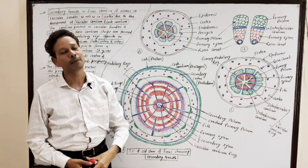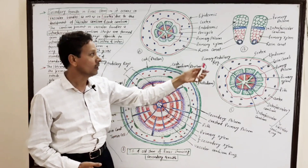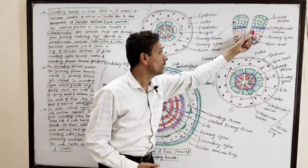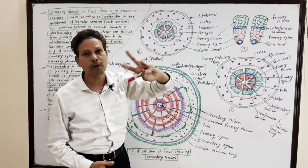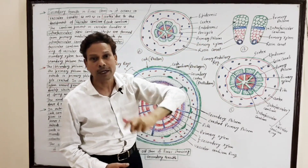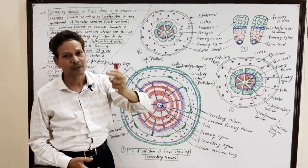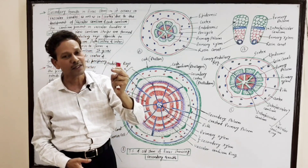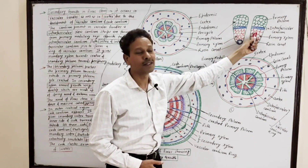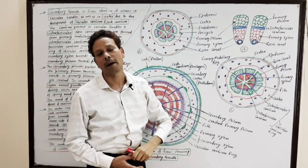Diagram A represents the primary structure of Pinus stem. Note down — Diagram B shows that in vascular bundles, there is a strip of cambium, a strip of meristematic dividing tissue. That cambium which is present in vascular bundles is called intravascular cambium.